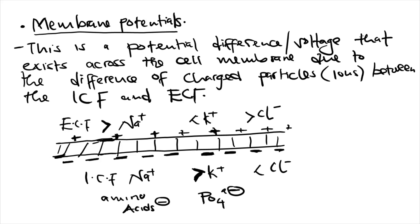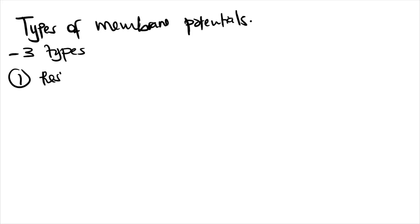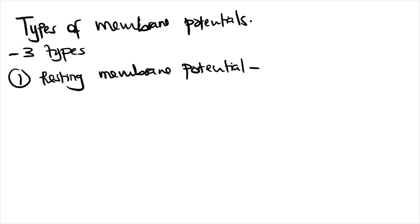Those are membrane potentials — that's why there is a potential difference across the cell membrane of every cell. Now let's look at the types of membrane potentials. The first type is the resting membrane potential, which is the membrane potential when the cell is at rest.